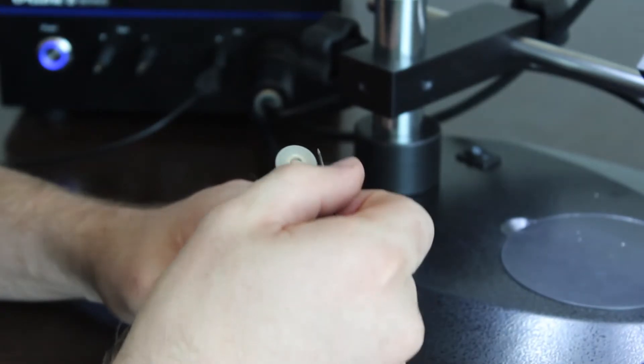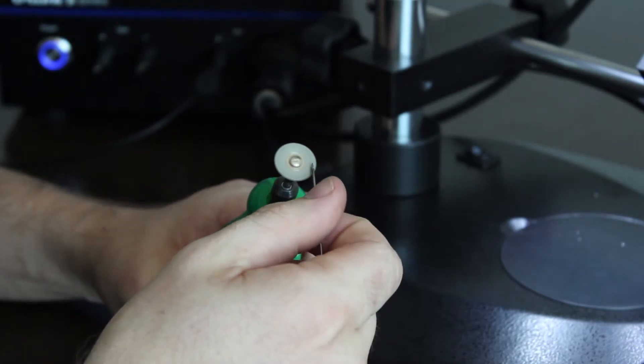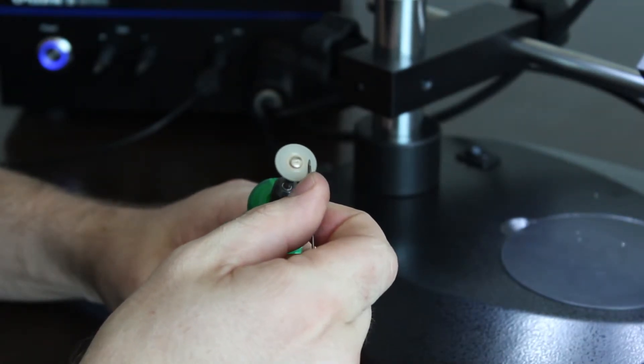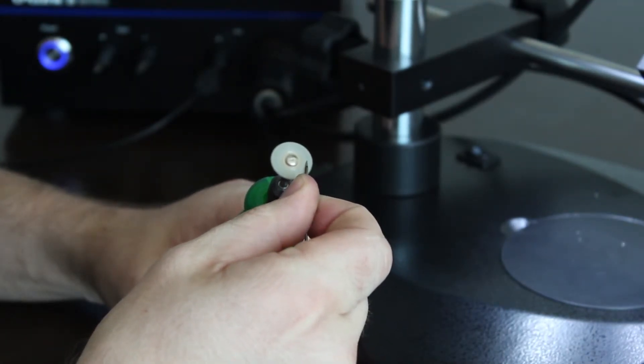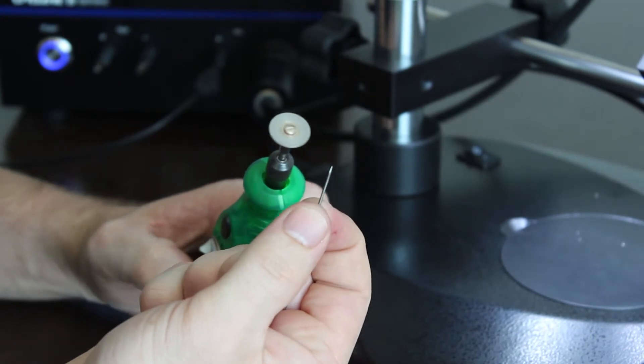We want our electrode at a fairly steep angle. We don't want it coming in directly, we want it coming in at a fairly steep angle to sharpen. Turn the electrode until we get a very sharp point.